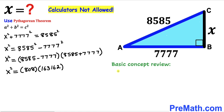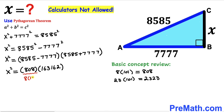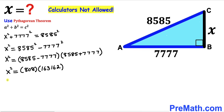Before we proceed, let's do a quick review. Notice that 8 × 101 = 808. Similarly, a two-digit number like 23 multiplied by 101 gives 2323. So 808 can be written as 8 × 101, and likewise 16362 can be written as 162 × 101. Therefore X² = 8 × 101 × 162 × 101.